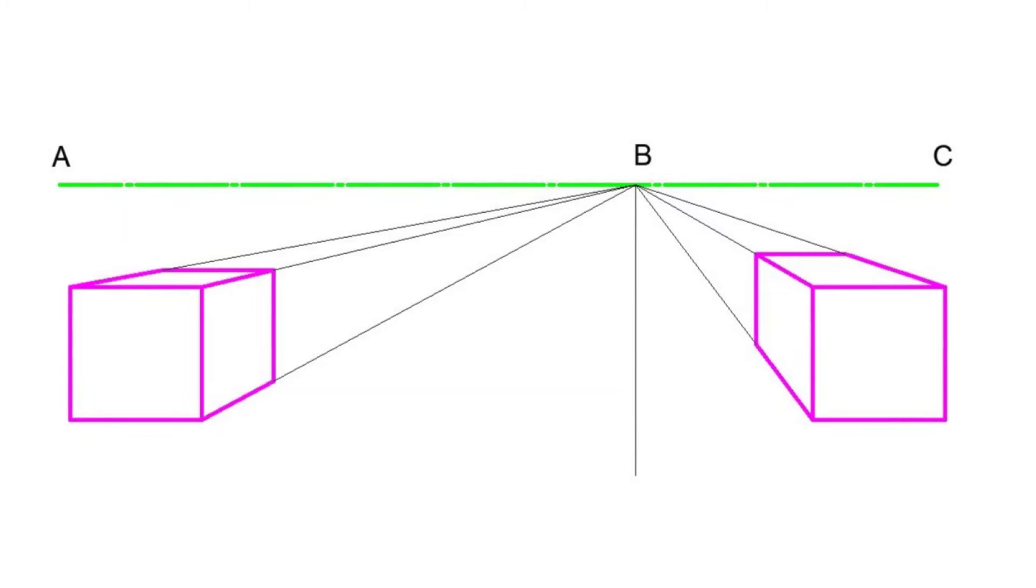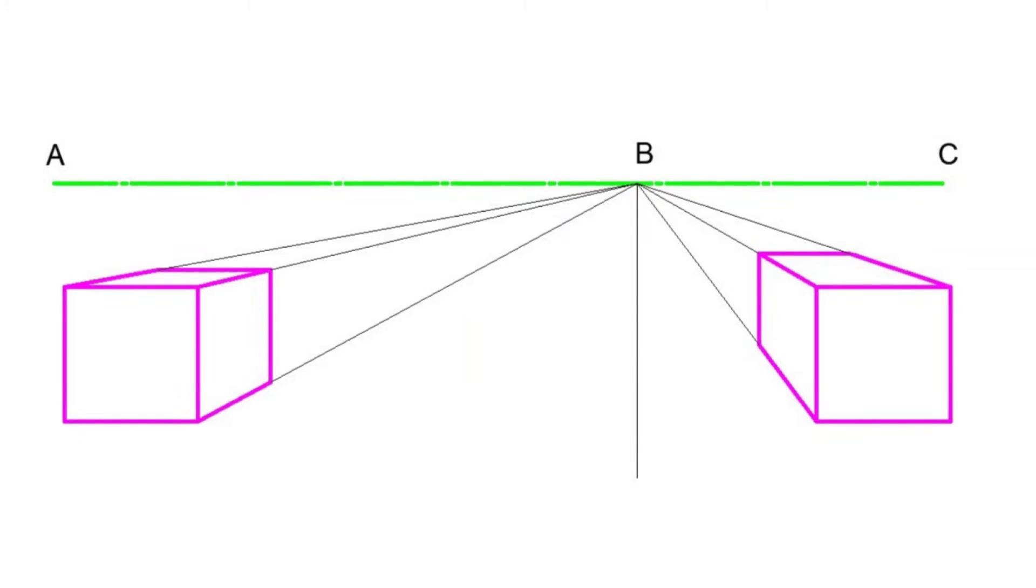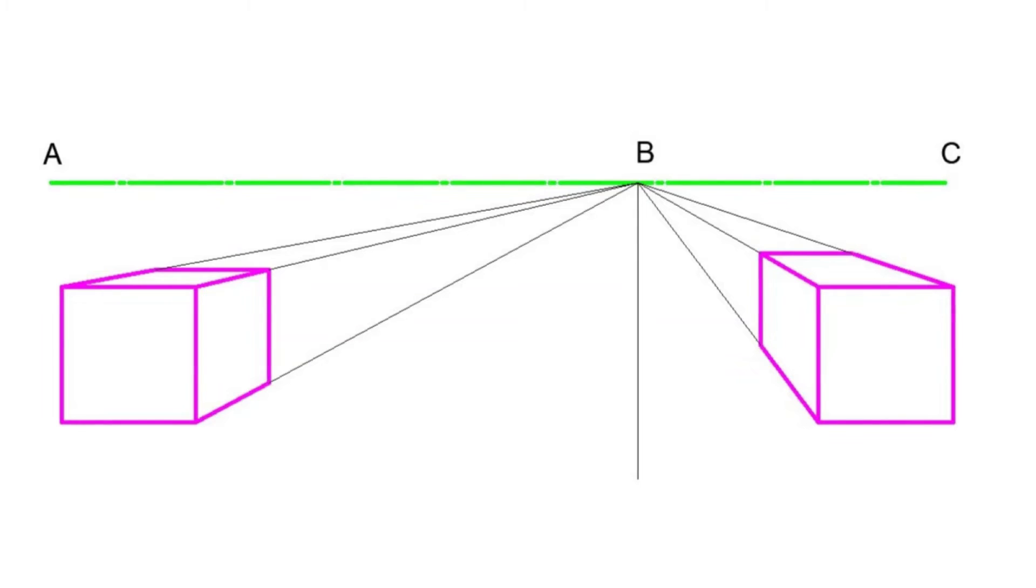Let's look at the 1 point perspective drawing. So we have our objects which are 2 cuboids in this case. And we have our horizon, which is AC, line AC. We have our vanishing point, which is point B. And our vanishing lines are all the lines heading from our objects to point B.